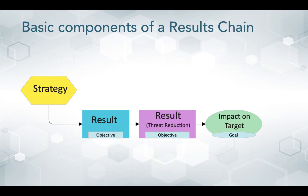After selecting our strategies and interventions, we then develop our theory of change as a results chain. It depicts our assumptions about how we expect a strategy to result in threat reduction and improve the viability of a conservation target. We call these assumptions our theory of change. In the following slides, I will illustrate how you develop a theory of change using a results chain and how you use it to define your actions and monitoring.